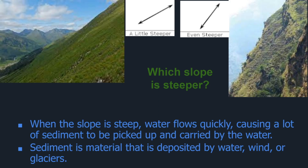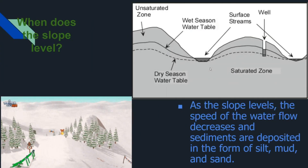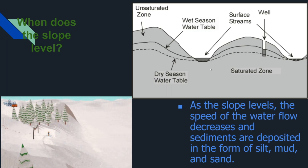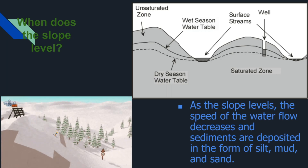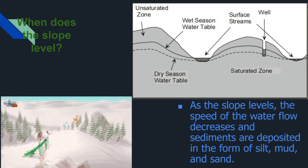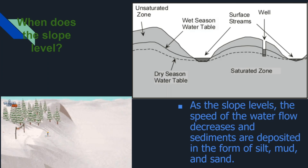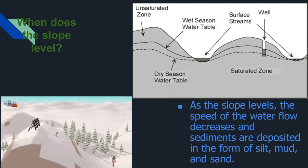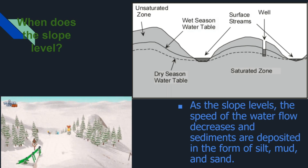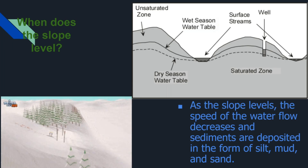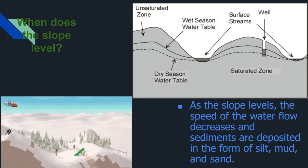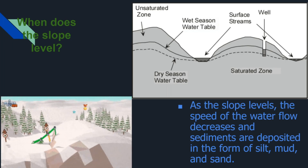The faster water flows, the more sediment is picked up, which becomes silt and such. Sediment is anything that water, wind, or glaciers move around, such as soil and dead materials. When the slope levels out, the speed of water decreases, and the slower the water, the more sediment builds up at the bottom. Fast-flowing water is capable of pushing sediment forward, but the more it slows, the more sediment piles up.